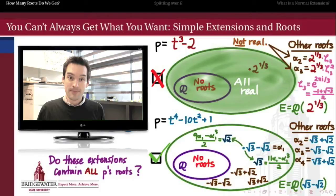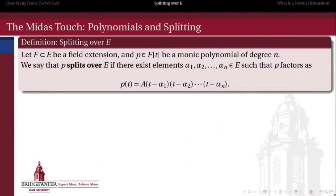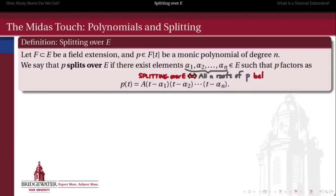So clearly there's a significant difference between the two extensions over the rationals. In the first case, we extended and we only got one root of that polynomial. In the second case, we extended and we got all roots of that polynomial. We're going to say that a polynomial splits over an extended field E if there exists a collection of elements of E such that P factors into a product of linear factors over E: (t - α₁)(t - α₂) and so on. That makes these alphas the roots of P. A polynomial splits over E if and only if all of its roots belong to E.